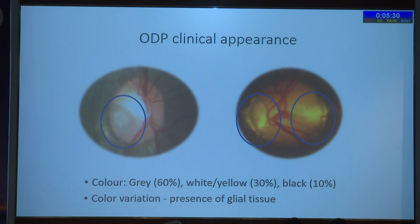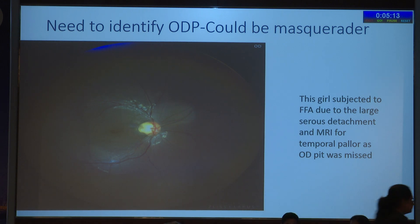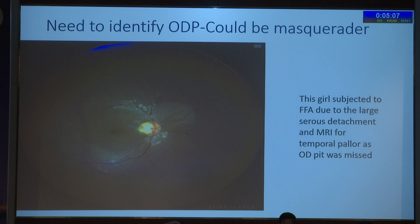The first preferred practice starts with diagnosis of the OD pit. I'll show you a case that was diagnosed as CSR. This girl underwent every other investigation by a retina specialist. They did FFA, nothing came up, then they found some temporal pallor and sent it to a neuro clinic where MRI was done.